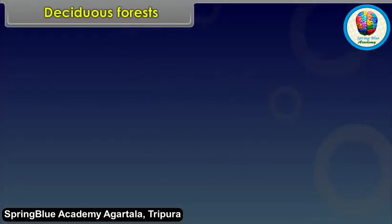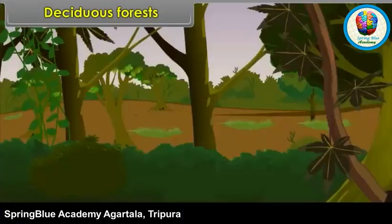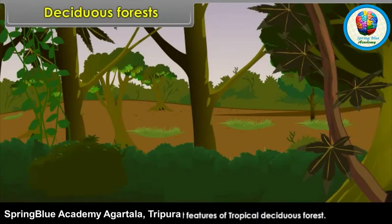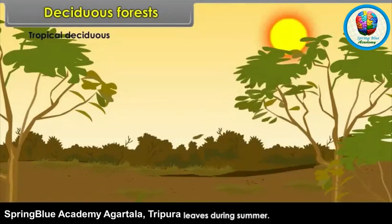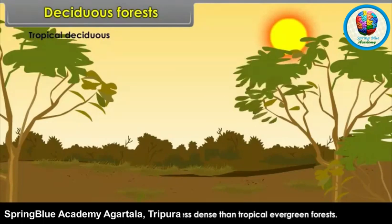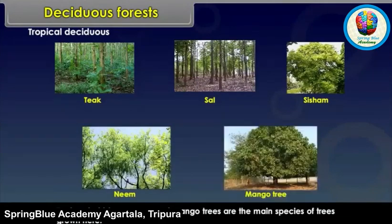Deciduous Forests: Deciduous forests are those in which trees shed their leaves in a particular season in order to conserve loss of moisture through transpiration. Tropical Deciduous Forests: These forests are found in subtropical regions with a distinct dry season. Trees shed their leaves during summer. These forests are comparatively less dense than tropical evergreen forests. Teak, Sal, Shisham, Neem and Mango trees are the main species grown here.